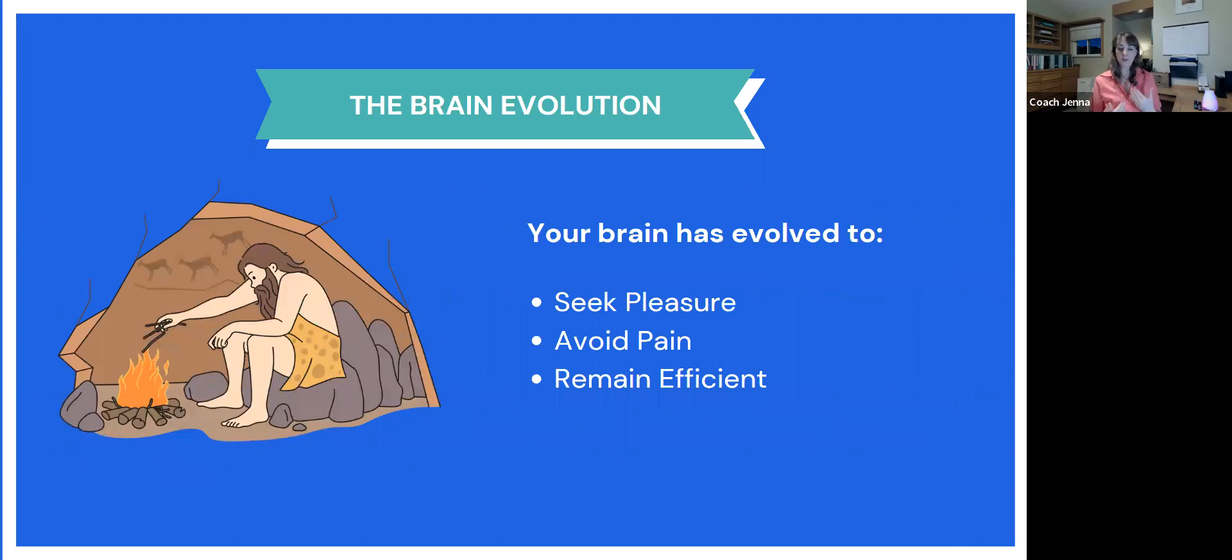So as we have evolved as humans, our brain has evolved as well. And now its main goal is to seek pleasure, avoid pain, and remain efficient. But those primal instincts are still in our reptilian brain. And they can be a big problem to us as entrepreneurs and what it means for you to start a business, be self-employed, or even just to be in sales.